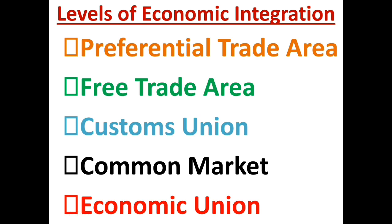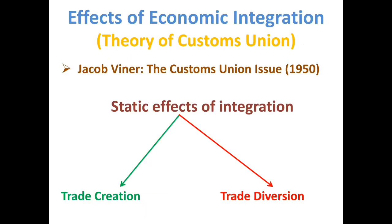Shifting our focus to the effects of economic integration, or the theory of customs union. The theory of customs union was first developed systematically by Jacob Viner in his 1950 work, 'The Customs Union Issue.' Economists like J.E. Meade, R.J. Lipsey, and H.D. Johnson have also contributed in improving upon the theory. Viner's analysis, also called a partial equilibrium analysis, examined the static effects of economic integration in terms of trade creation and trade diversion.